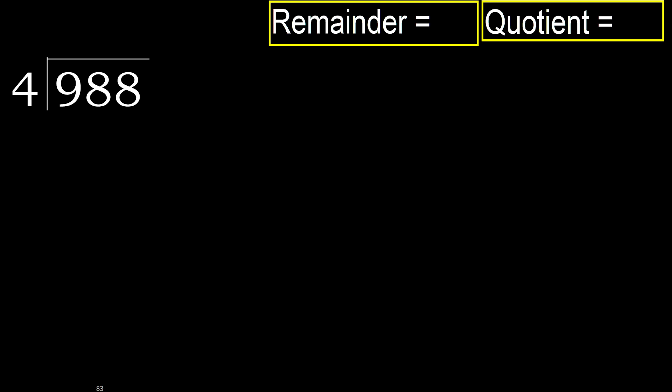988 divided by 4. 9 is not less, therefore with 9 and 4.